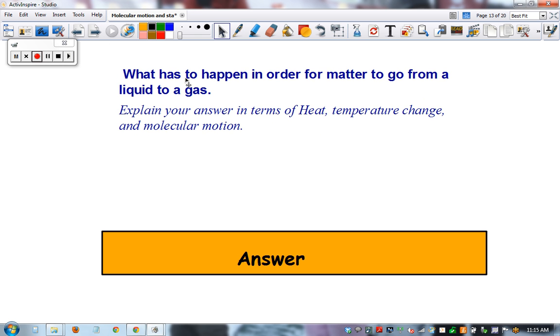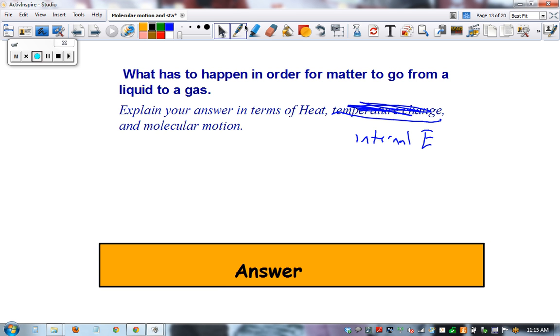So in closing, one of your test questions will be: what has to happen in order for matter to go from a liquid to a gas? I would like you to explain your answer in terms of heat, temperature, internal energy, and molecular motion. The answer would be, going from a liquid to a gas is evaporation. Add heat, increase molecule speed, which increases internal energy of the liquid water.